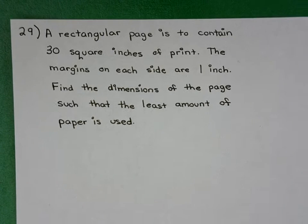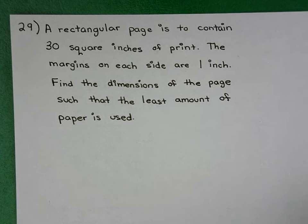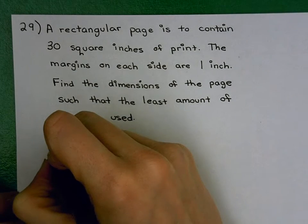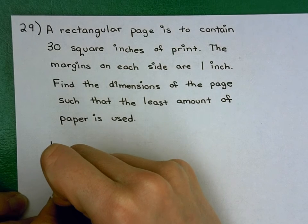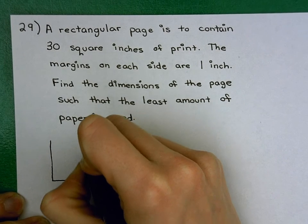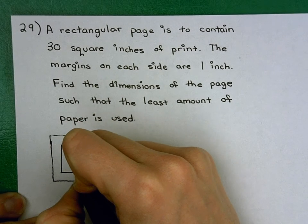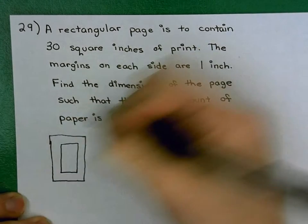So, first step of optimization problems is to draw a picture. I would highly recommend doing this so that you can identify what quantities you're working with, what variables you're working with, to build the proper equations. We've got our paper here with our printed region.